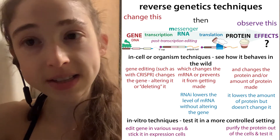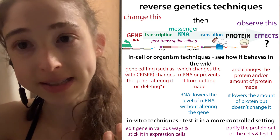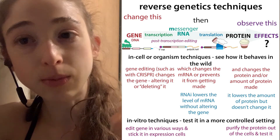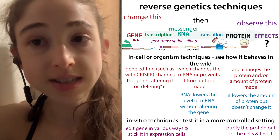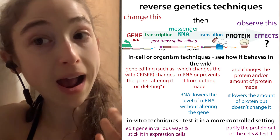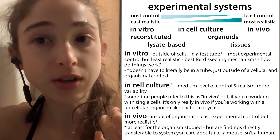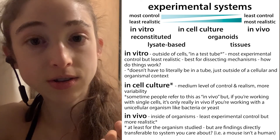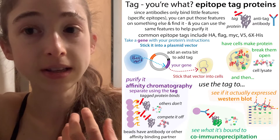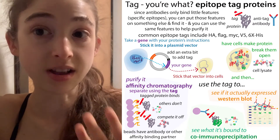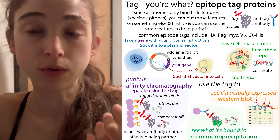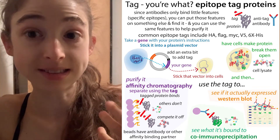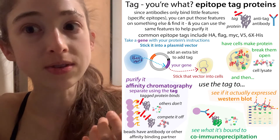This isn't to dissuade you from using these techniques — every technique has its pluses and minuses. It's just a reminder to keep these things in mind: always consider the limitations, how the technique relates to what you're actually interested in, what answers it can give you and what it cannot, and what controls you can do to make sure what you're seeing is actually relevant. Often exogenous technology is used as a proof of concept or a first look. But if you really want to show that something is happening naturally, you need to look endogenously.